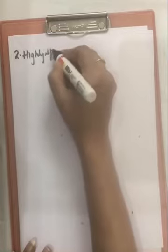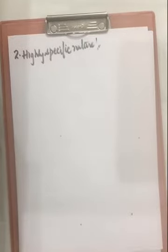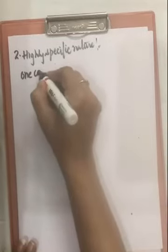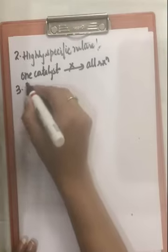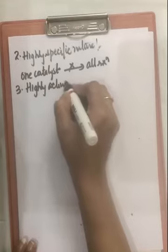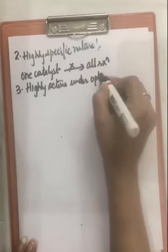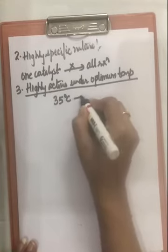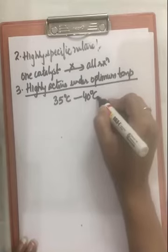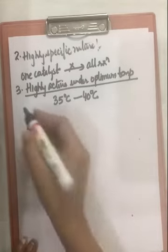The next characteristic of enzyme catalysis is highly specific nature. Enzymes are highly specific — one enzyme cannot catalyze all reactions. They are specific in their action: this enzyme will catalyze this reaction only. The third characteristic is that enzymes are highly active under optimum temperature — enzymes can function only at 35°C to 40°C. At high temperature they get deactivated and lose their activity.